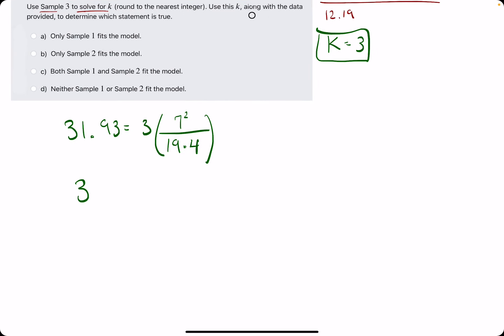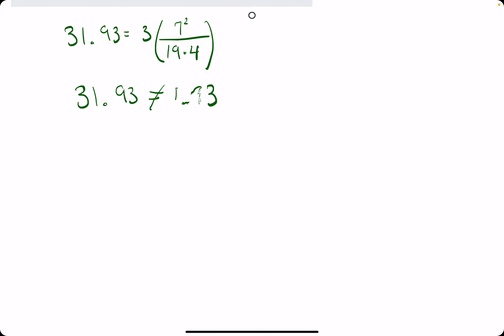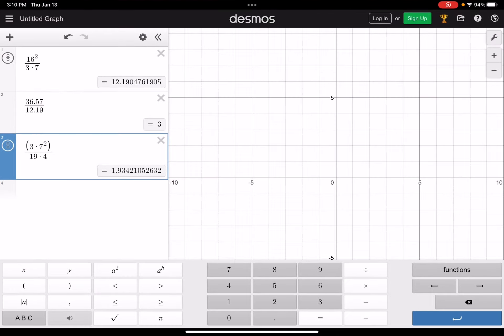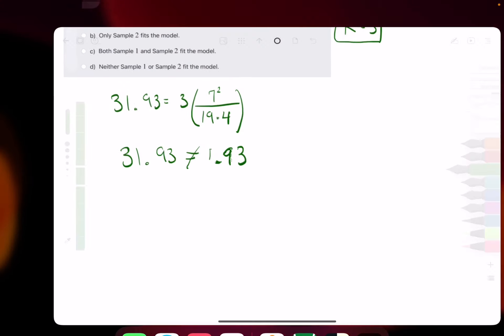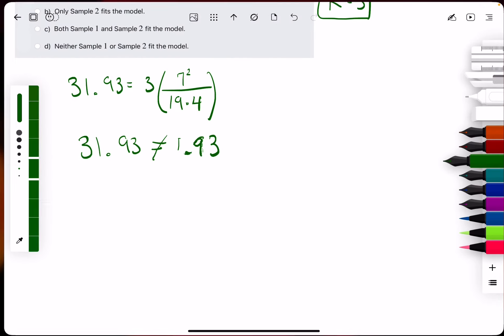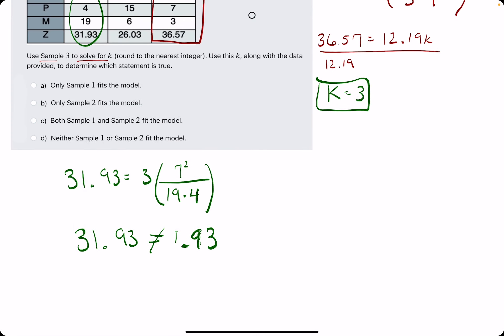1.93 is not equal to 31.93. So that, of course, cannot be correct. Let me just double check, make sure I did not miss anything. I think we are safe to say that Sample 1 is not fitting the model.